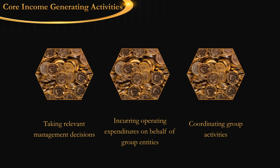The next core income generating activity is incurring operating expenditures on behalf of the group companies. Operating expenditures can be in the form of engaging specialist advice, procuring technology on behalf of the group company, purchasing significant assets or specific services on behalf of the group companies, and so on.